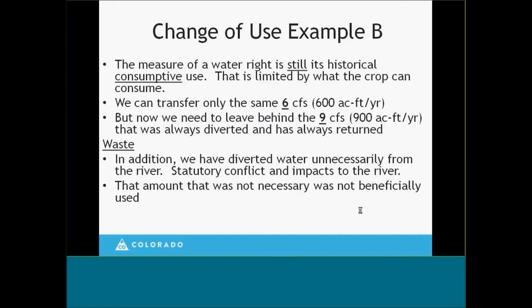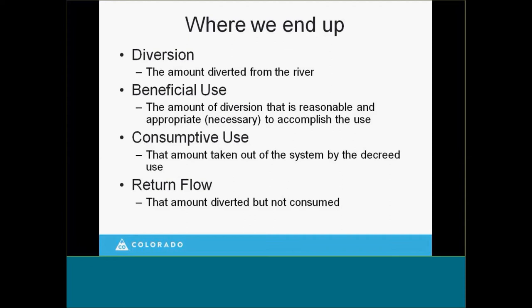To tie this together: diversion is self-defined — it's the amount diverted from the river. Beneficial use is that amount of diversion that is reasonable and appropriate — necessary to accomplish the use. In our case, it was 10 CFS, or 1,000 acre feet, not the 15 CFS. Consumptive use is the amount taken out of the system by the decreed use — in our case, 600 acre feet or about 6 CFS. Return flows are the amount diverted but not consumed, which ends up back to the river. In our first example that was 400 acre feet; in our second example it was 900 acre feet. Either case, the return flow amount creates that obligation.